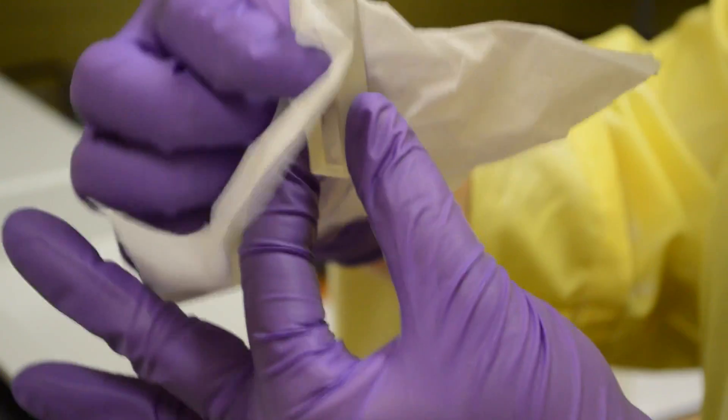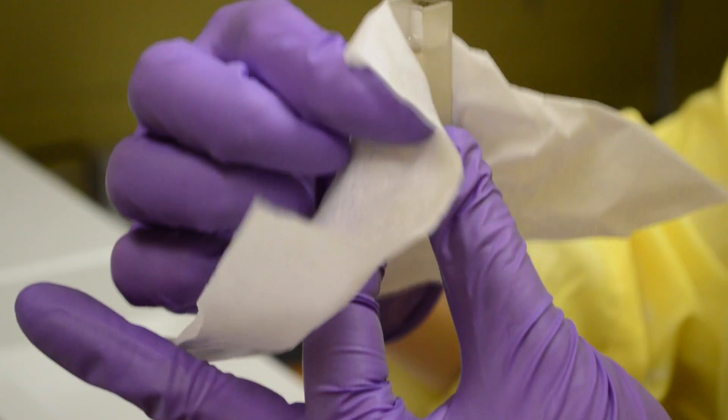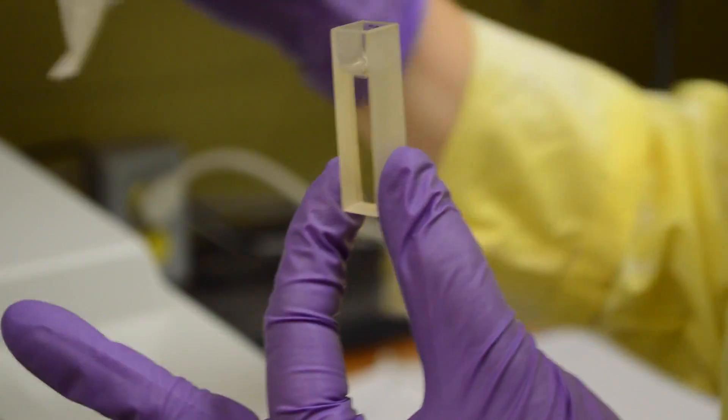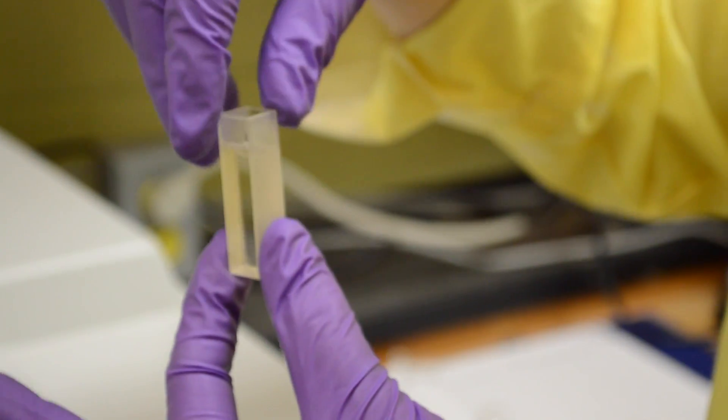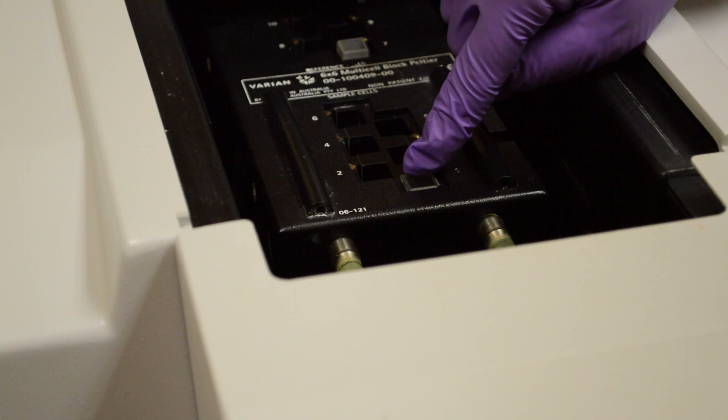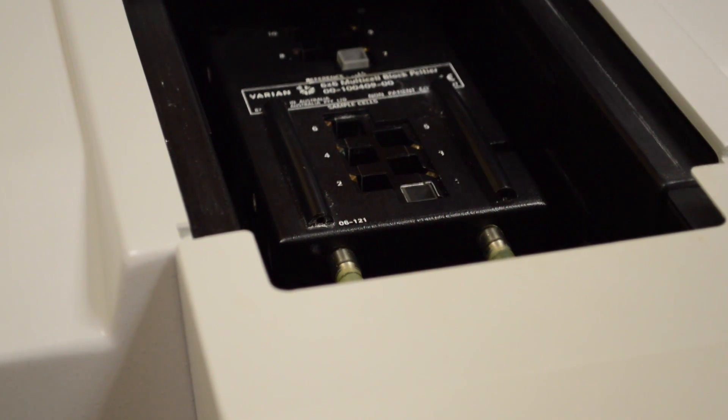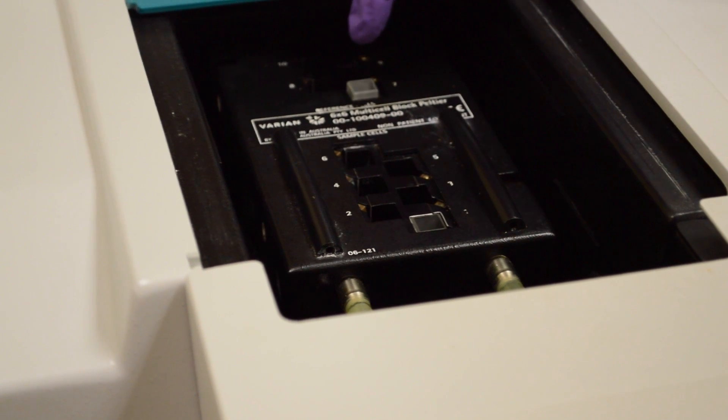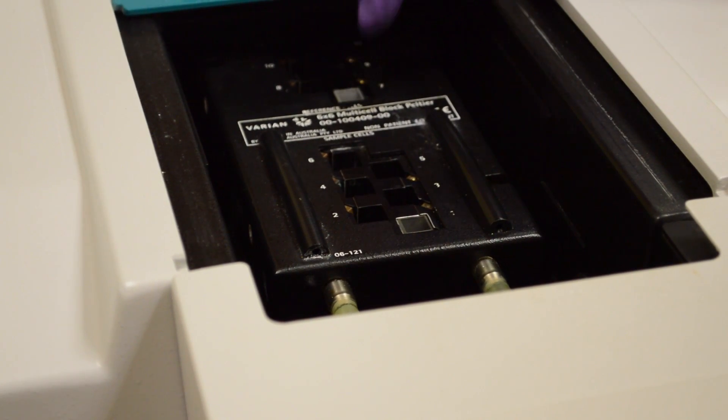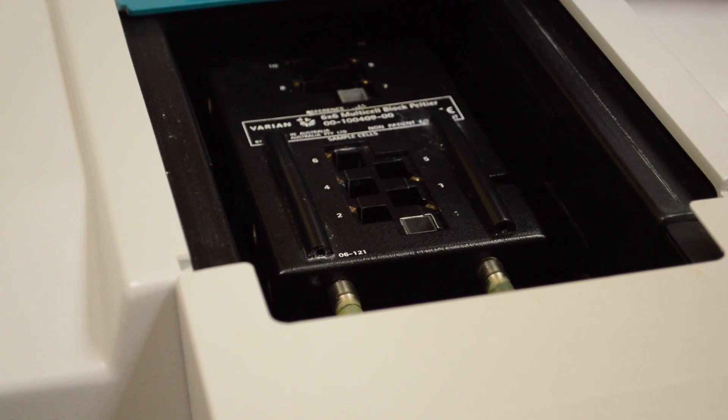To put the sample in, clean the sides with a kim wipe to ensure that there is no residue left on the clear side of the cuvette. You're going to insert the sample into the machine the same way you put the blank in. So once it's pushed down all the way, make sure that the cuvette in number seven is pushed down all the way as well as we lifted it to remove the first cuvette.